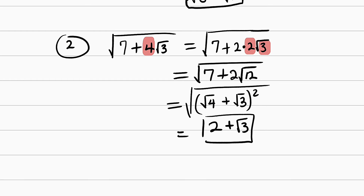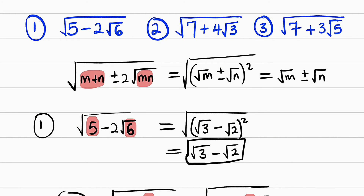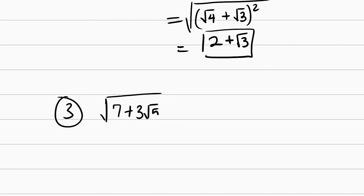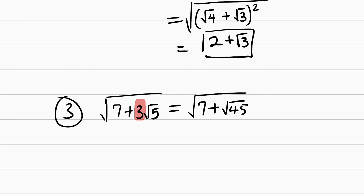Now let us take our final problem. We have the square root of 7 plus 3 root 5. Square root of 7 plus 3 root 5. Again, this is 3, not 2, and 3 cannot be written as a multiple of 2. So we can directly take this 3 into root 5, but before you do that, you have to square 3. Square of 3 is 9. So this is equal to square root of 7 plus root of 9 multiplied by 5, which is root 45. So the question is, how can we introduce 2 right here? We can do that by multiplying root 45 by 2.